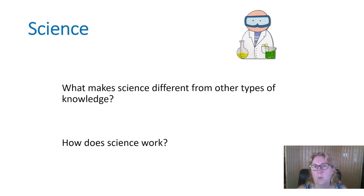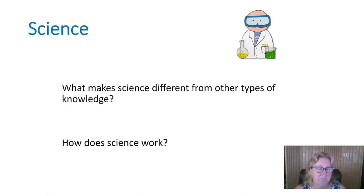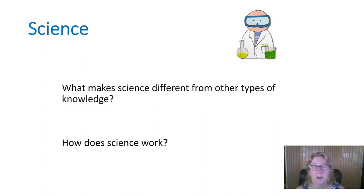Let's talk about what science is and how it's different from other ways of knowing about the world. Science isn't the only way to know things, but there are specific rules for something to qualify as science. Just putting the word 'science' in something doesn't make it science — political science is not really science, and social science is only partly science. Let's talk about how to tell if something is science and the basic scientific process.